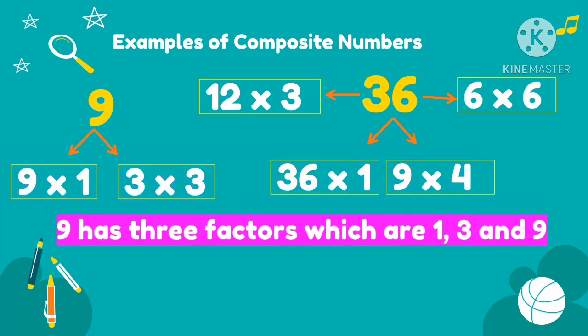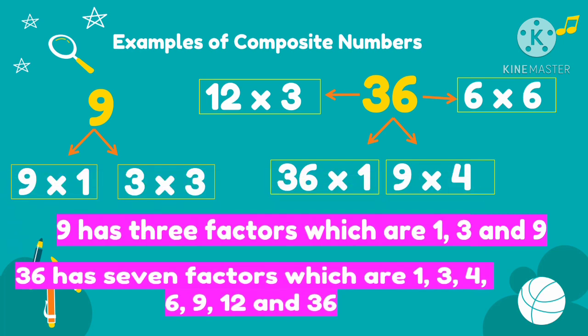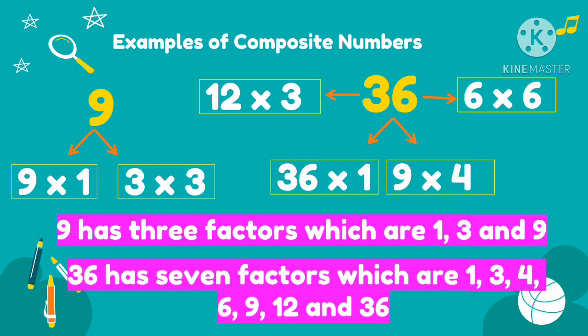So let us list down the factors of 9. So 9 has 3 factors, which are 1, 3, and 9. We only write it once even though 3 appears twice. So it has 3 factors. Then, 36 has 7 factors, which are 1, 3, 4, 6, 9, 12, and 36. So, they have more than 2 factors. That's why they are composite numbers.